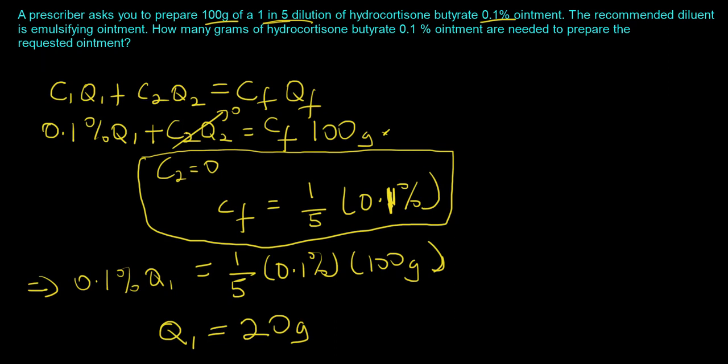Just to recap on this question, the key thing was to know that C2 is zero and that your Cf, because it's a 1 in 5 dilution, is actually going to be one-fifth of your initial concentration. You could easily do this with algebra because C2Q2 goes away and you're just left with Q1 being equal to 1/5 times 100, which is 20 grams.